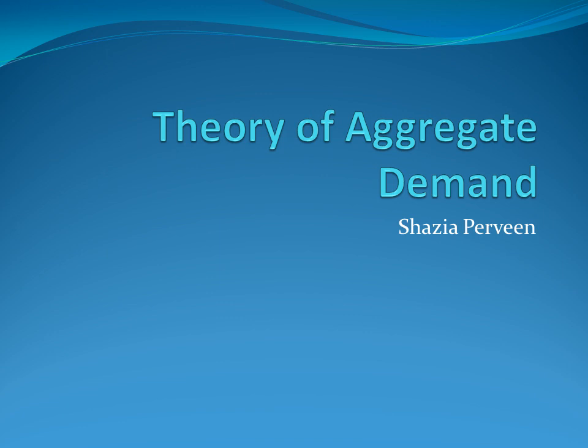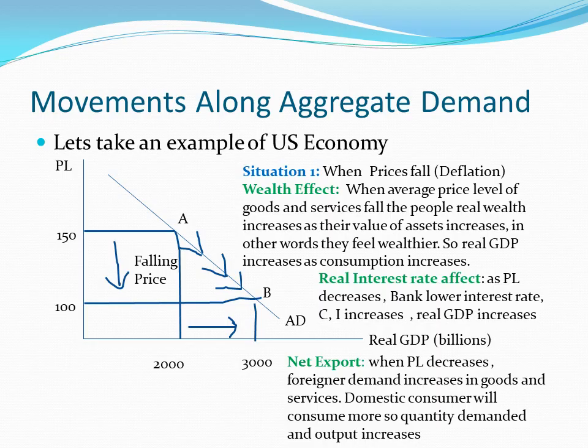Assalamualaikum dear students, here is the remaining part for the theory of aggregate demand, which is movements along the aggregate demand curve. Let's take an example of the US economy. On the y-axis you can see the price level, and on the x-axis you can see the real GDP in billions. The arrows shown go downward from A to B, because this is a situation when prices have fallen, and when prices fall there is an increase in real GDP or real output.